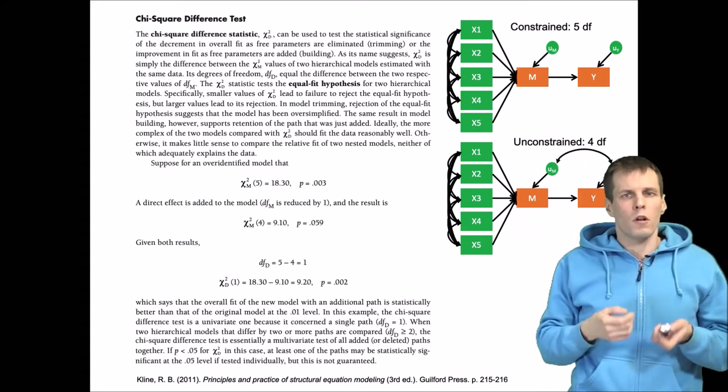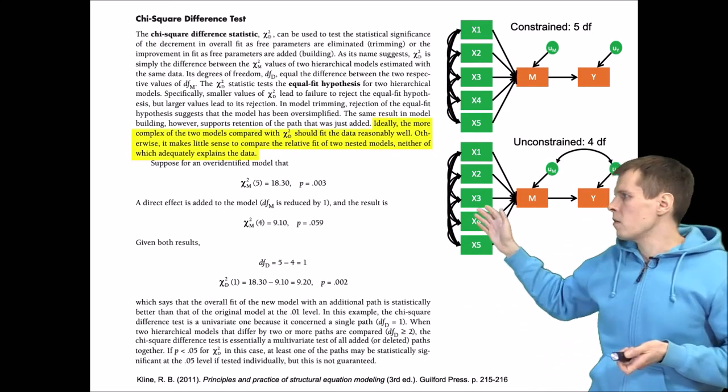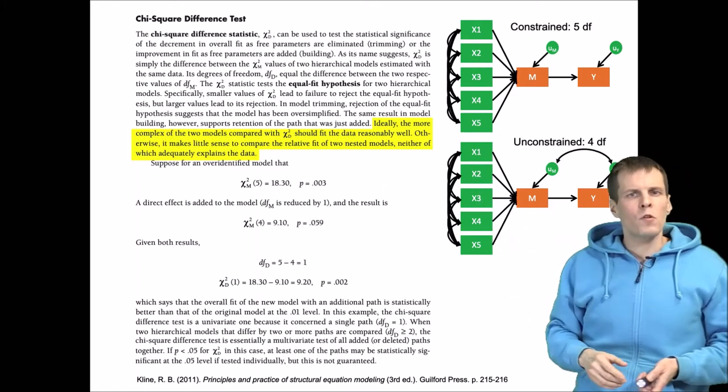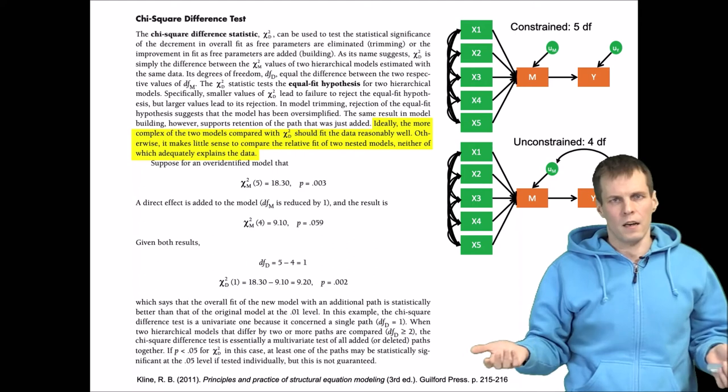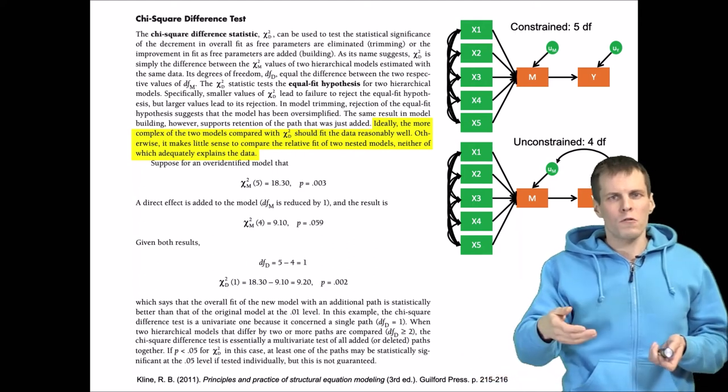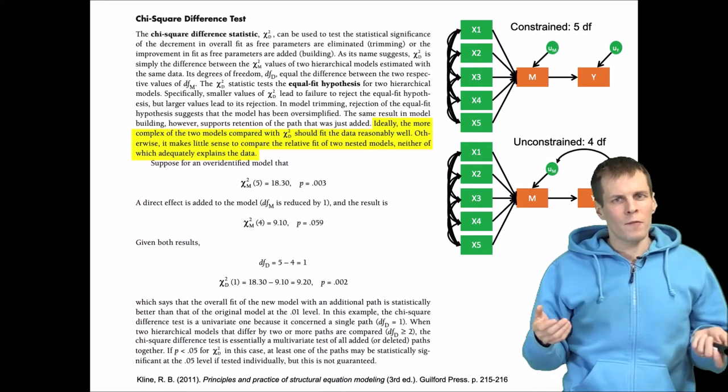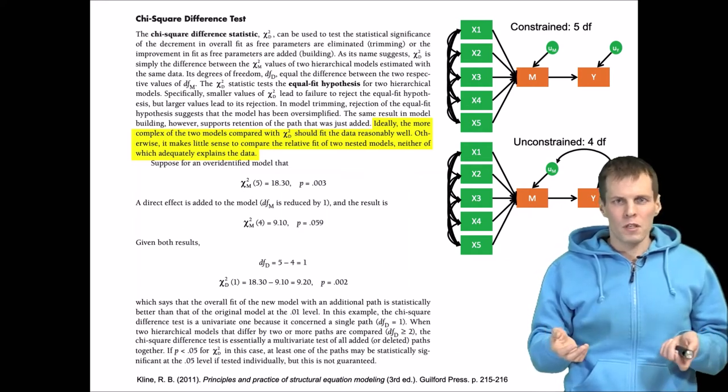There is one important thing that Klein's book notes. We have the issue of model fit. If your less constrained model doesn't fit the data at all, then your more constrained model will misfit even worse.